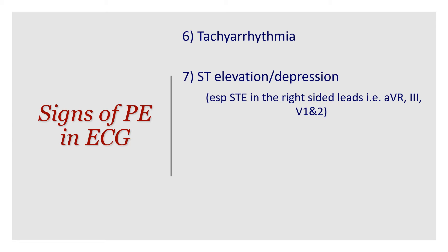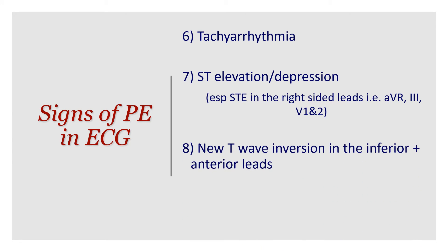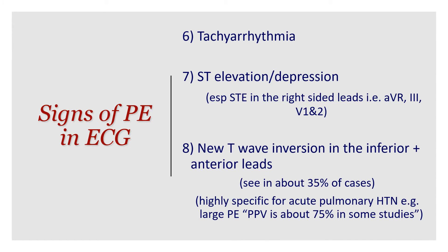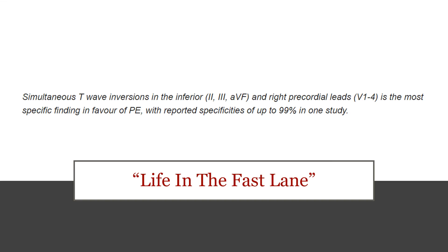The finding I want to focus on this week is new T wave inversion in the inferior and anterior leads simultaneously. This simultaneous T wave inversion in inferior and anterior leads is seen in about 35% of cases, and it is highly specific for acute pulmonary hypertension — in emergency medicine terms, that means PE. It is actually one of the most specific signs I'm aware of for acute pulmonary hypertension. Life in the Fast Lane states that simultaneous T wave inversions in the inferior and right precordial leads is the most specific finding for pulmonary embolism, with studies reporting specificity of up to 99%.